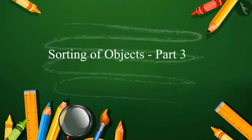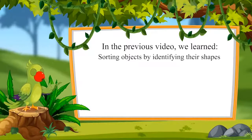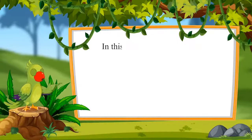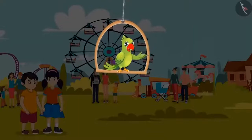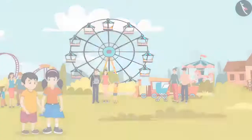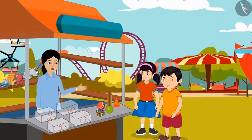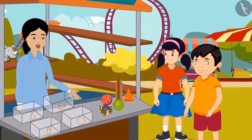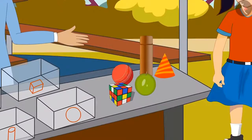Sorting of Objects, Part 3. Hello children, I am the parrot and I welcome you to this video. In the previous video, we learned sorting objects by identifying their shapes. In this video, we will learn sorting different objects on the basis of their shape. Chotu and Neha have gone to the fair today and they liked a game there. The game rules: sort all items on the table by their shape and place them in four different boxes — round ball-like objects, box-like objects, cylinder-like objects, and ice cream cone-like objects.